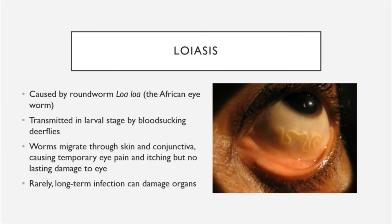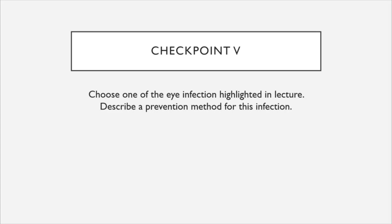Last but not least, we have loiasis, caused by the roundworm Loa loa, also known as the African eye worm. This is somewhat of a misnomer because this worm actually causes systemic infections, although those infections are often detected when the worm becomes visible in the eye. It is transmitted during its larval stage by deer flies, which like mosquitoes and ticks are blood-sucking insects. The worm migrates through the skin and conjunctiva and can cause temporary eye pain and itching but usually no lasting damage to the eye. Rarely, long-term infection with Loa loa can cause damage to vital organs including the kidneys, heart, and liver.